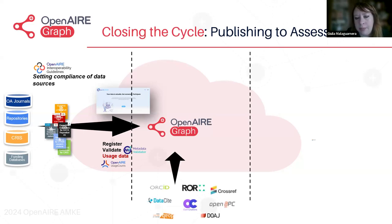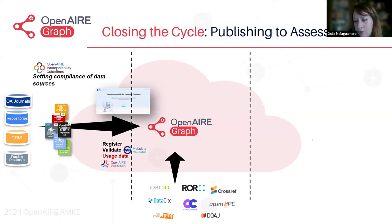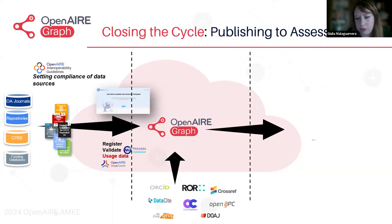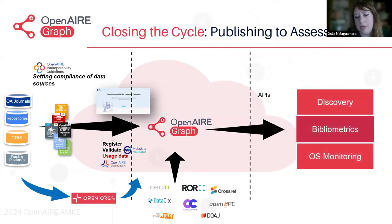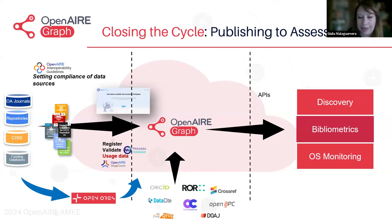The OpenAIR graph is receiving information from other data sources that are either registries like ROR, ORCID, or other sources such as DOAJ and other initiatives like CrossRef, DataCite, OpenCitation, and OpenAPC, which provide extra information like citations and other metadata. In the OpenAIR graph, we provide APIs that serve discovery, bibliometrics and open science monitoring. We also have a new service called OpenOrcs.